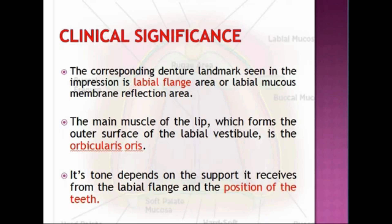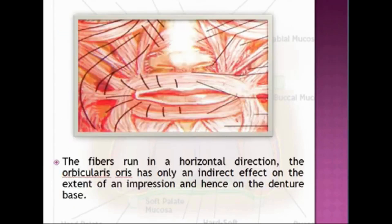The main muscle of the lip forming the outer surface of the labial vestibule is the orbicularis oris. Its tone depends on the support it receives from the labial flange and the position of the teeth. The functional depth here is less because the muscle fibers are attached perpendicular to the crest of the alveolar ridge, and therefore when they contract, the denture gets dislodged easily.